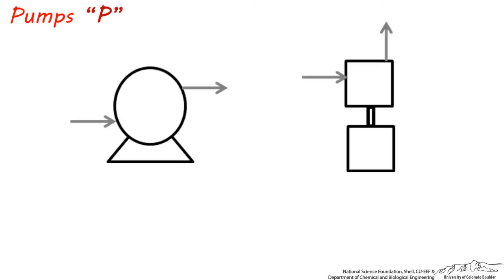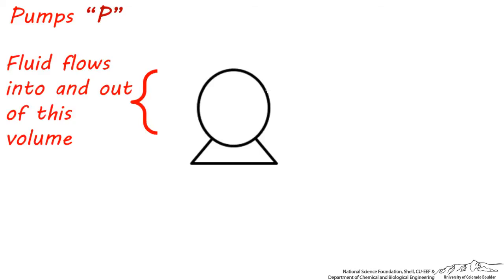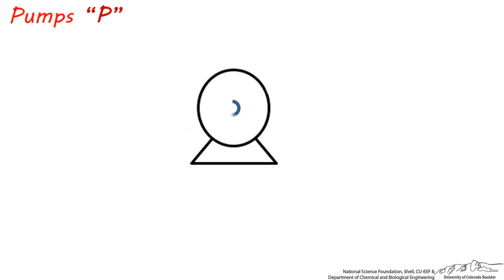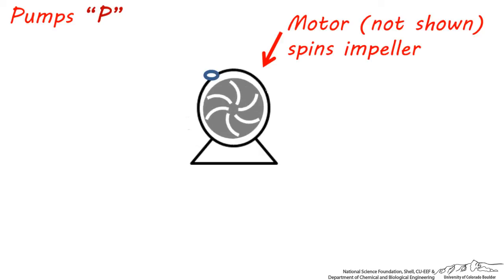So you can understand how these units function, let's briefly look at some key parts. This symbol is usually a representation of a centrifugal pump. This circle represents the volume the fluid flows into and out of. This bottom portion is the stand the pump rests on. Fluid usually enters the center of the pump and will exit perpendicular to the inlet. On the inside, there is an impeller which rotates at hundreds or thousands of revolutions per minute. Behind the pump, there is a motor, which is responsible for spinning the shaft that rotates the impeller.